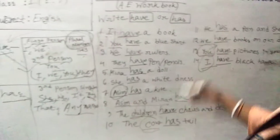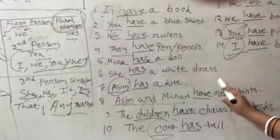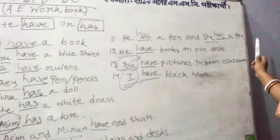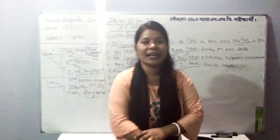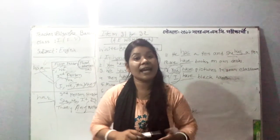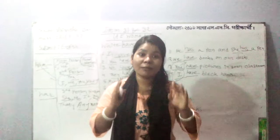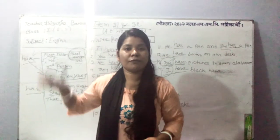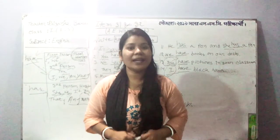Let us review all answers: I have a book. You have a blue shirt. We have rulers. They have pens or pencils. Mira has a doll. She has a white dress. Asim has a kite. Asim and Miran have red shirts. The children have chairs and desks. The cow has a tail. He has a pen and she has a pen. We have books on our desk. You have pictures in your classroom. I have a blackboard here. So just remember two things: for I, we, you, they — use 'have'; for he, she, it, this, that and any name — use 'has'. Please fill in the blanks in your book and submit it. We will meet very soon — stay well and stay safe.